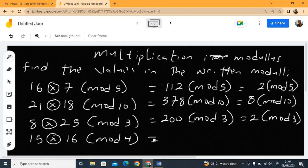The last one we have 15 times 16, that is 240. 240 mod 4. So when you divide 240 by 4, that should give us 60. So 240 divided by 4 is 60, remain 0. There is no remainder here, so you are going to write 0. Because there is no remainder, 0 mod 4.